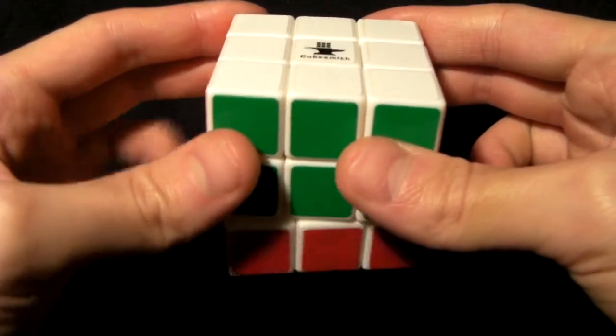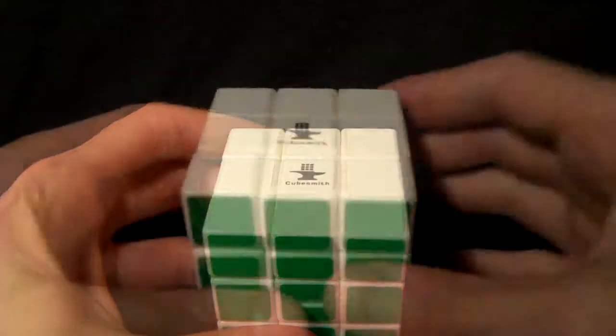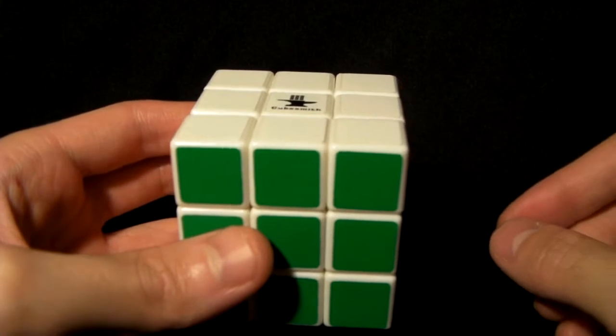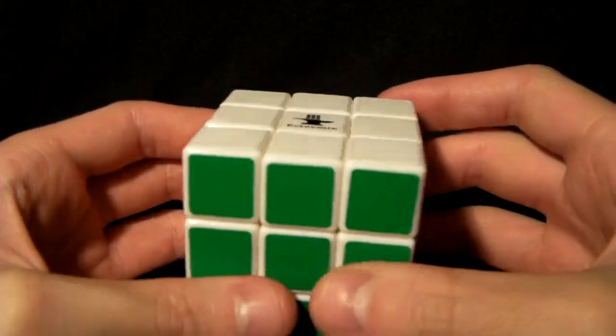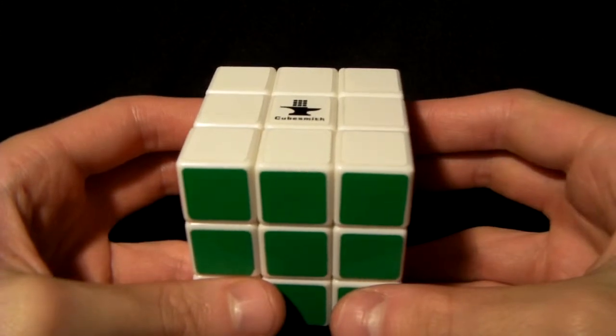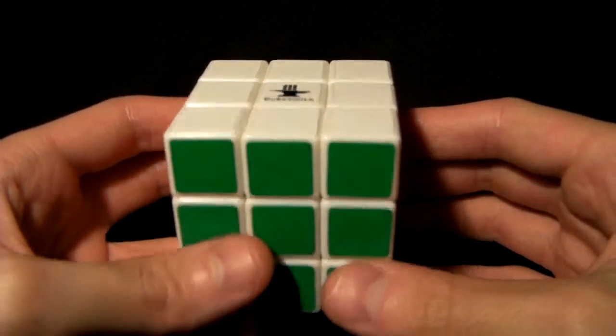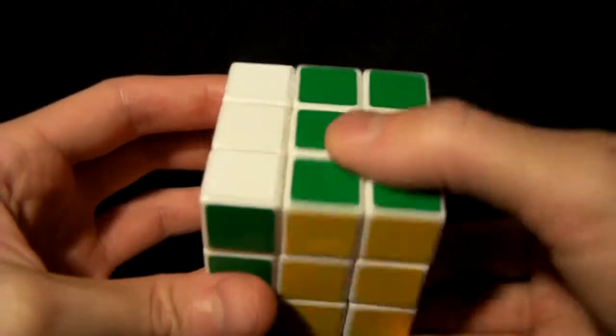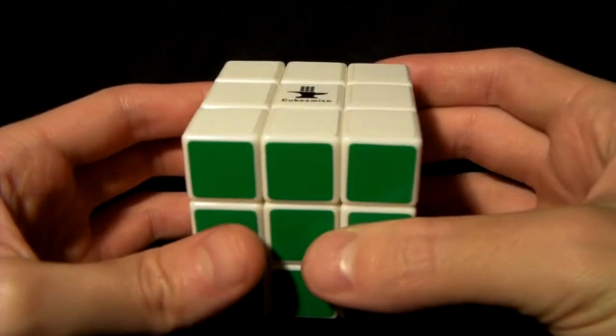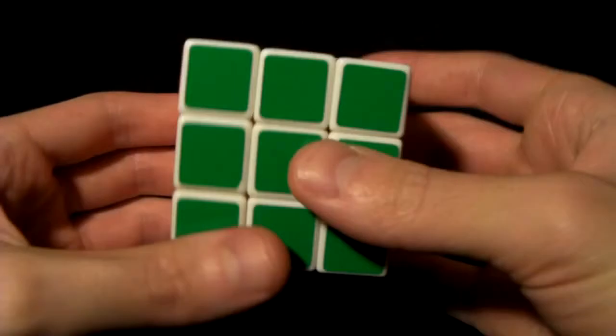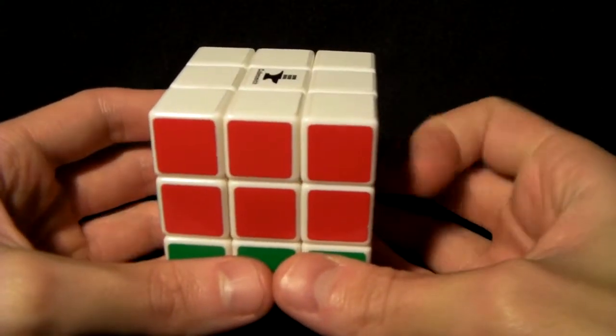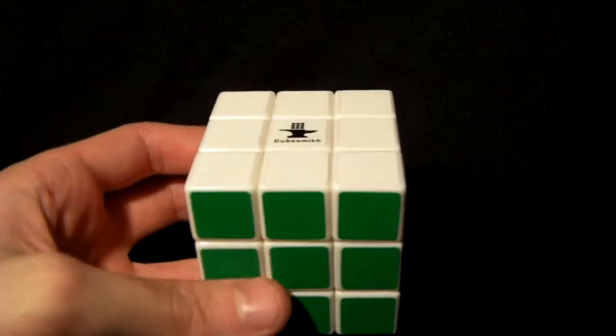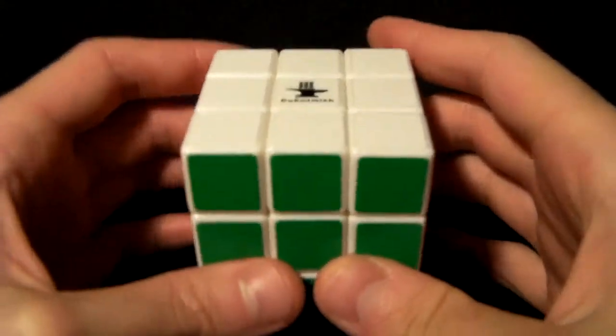On the cube there is also a double layer, and that is really easy - it's the exact same as single layer except you're moving two layers at a time. In notation, the double layer turns are denoted by the exact same thing except the letter will be in lowercase. So capitals indicate a single layer, lowercase indicates double layer. For example, we have lowercase r, lowercase r prime, and lowercase r2. Similar for u - lowercase u, lowercase u prime, lowercase u2. I'm not going to go through them all because it's the exact same as single layer.